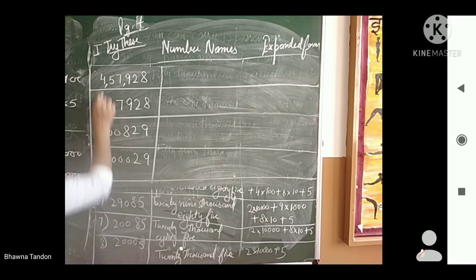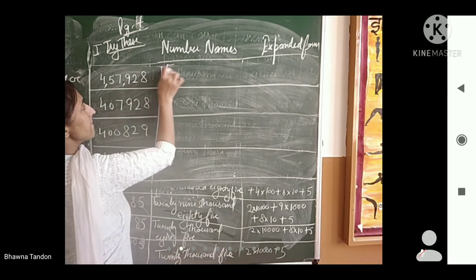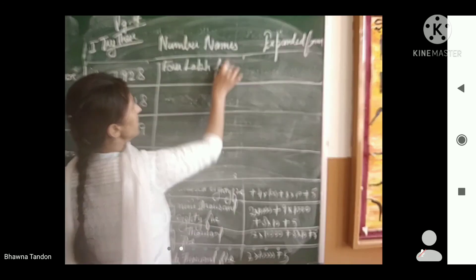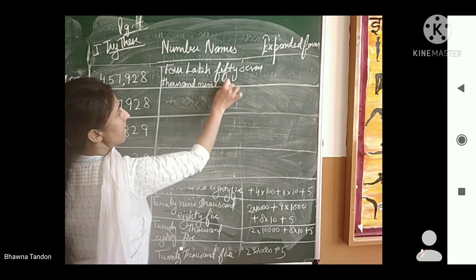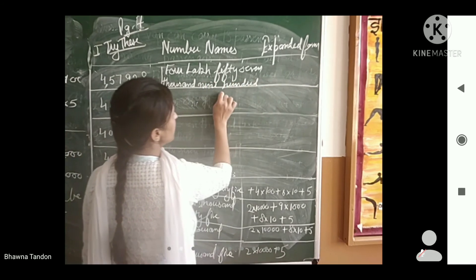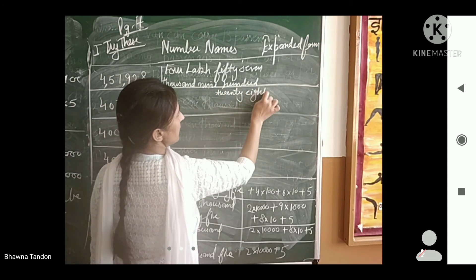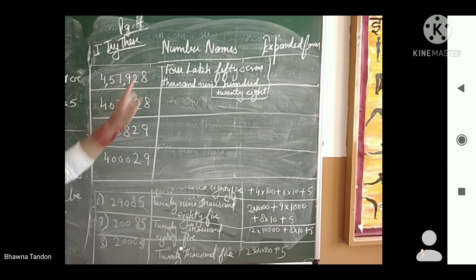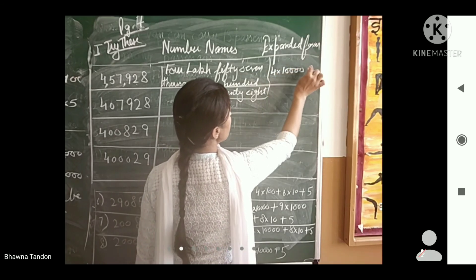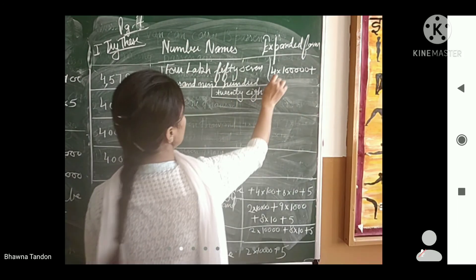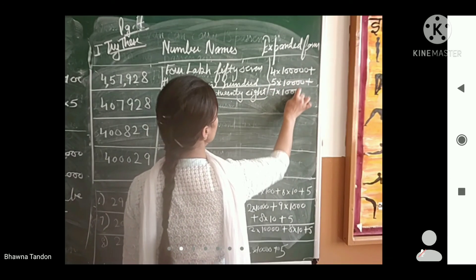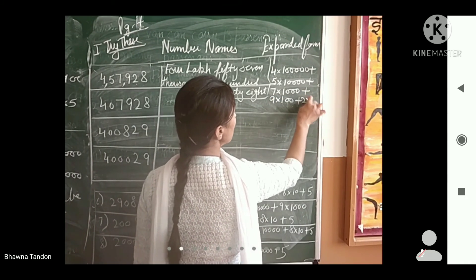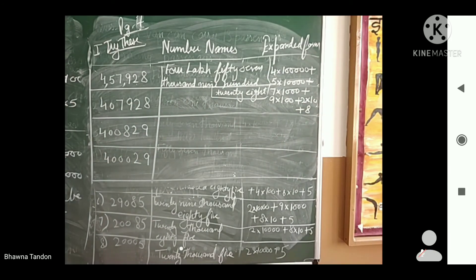Here we will write the expansion for 4,57,928. The expansion will be: 4 × 1 lakh + 5 × 10,000 + 7 × 1,000 + 9 × 100 + 2 × 10 + 8. This is the expansion for the first number.